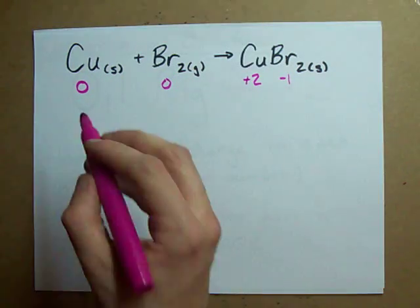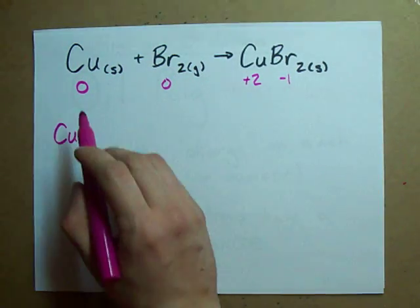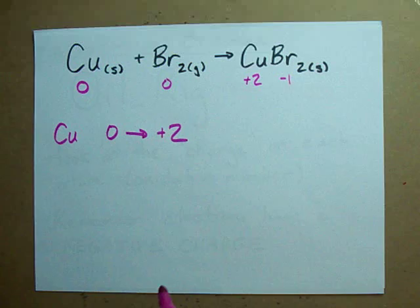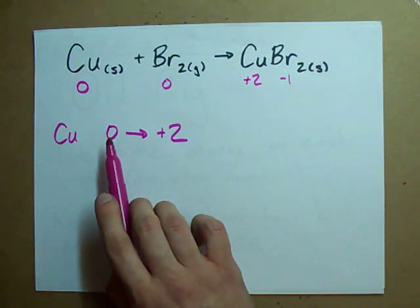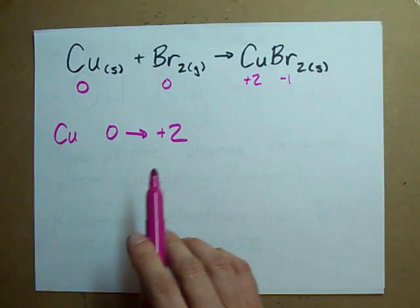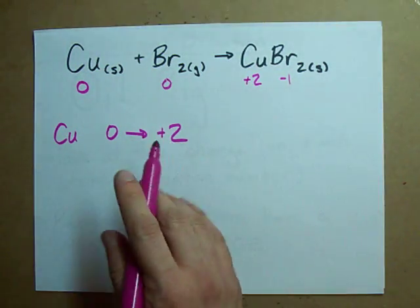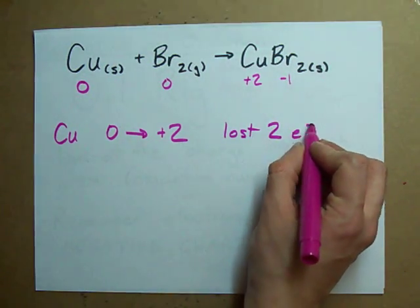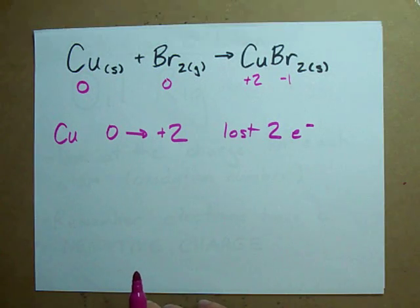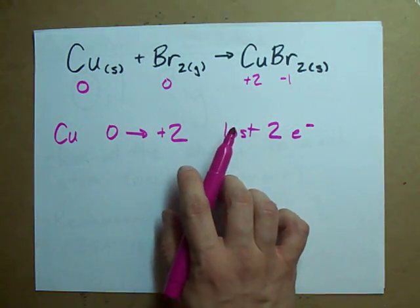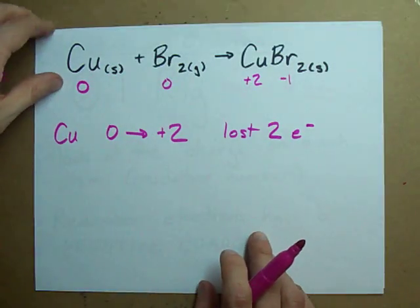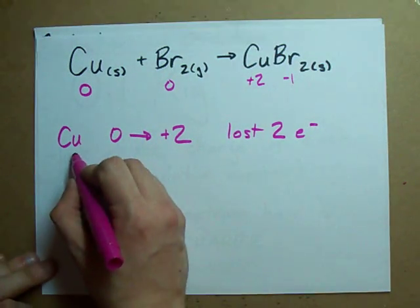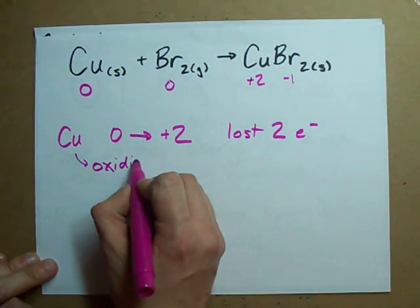Here's my point: the copper atoms went from a charge of zero to a charge of plus two. If you go from a charge of zero to plus two, what happens to your electrons? Electrons have a negative charge — this atom lost two negative charges, meaning it lost two electrons. A loss of electrons — oxidation is a loss of electrons, so the Cu has been oxidized.